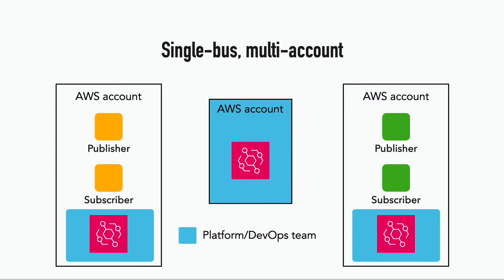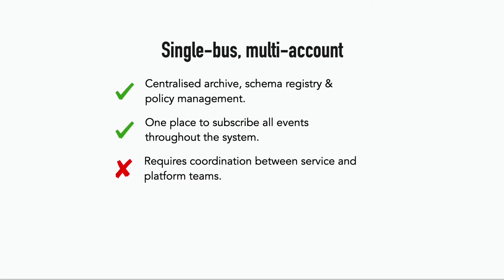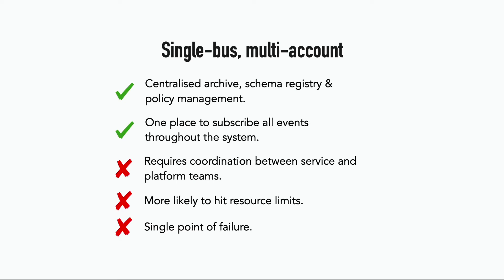From an infrastructure point of view, the event buses are owned by a platform team, so it requires coordination between the service and platform teams on any changes related to these event buses or to update the event rules, and this coordination can have an impact on your developer velocity. With the central event bus you're also more likely to run into service limits, like the number of event rules or the number of PutEvents operations per second. And the central event bus is a single point of failure — if anything happens to it, no events can be published or received.